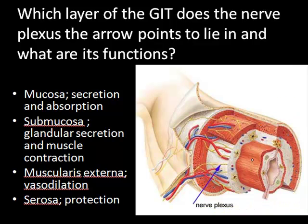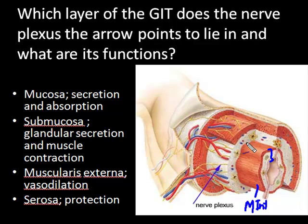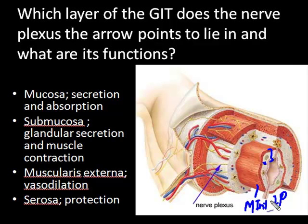The innermost layer is the mucosa, which consists of three parts. First, a muscle layer called muscularis interna or muscularis mucosa, which has an inner circular and outer longitudinal layer — much thinner compared to muscularis externa. Then there is a connective tissue layer known as the lamina propria, which has blood vessels and some glands. Finally, it has the lining epithelium. So that is the mucosa.